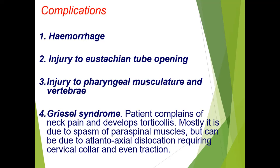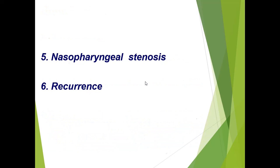Complications of adenoidectomy include hemorrhage, injury to the eustachian tube opening (to avoid this, always remain in the midline while shaving adenoids), and injury to the pharyngeal musculature and vertebra. One serious complication is Grisel's syndrome, in which the patient complains of neck pain and develops torticollis, mostly due to spasm of paraspinal muscles but possibly due to atlanto-axial dislocation, which can be life-threatening and may require a cervical collar or traction. Nasopharyngeal stenosis and velopharyngeal insufficiency can also occur.